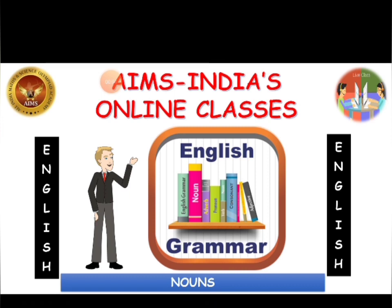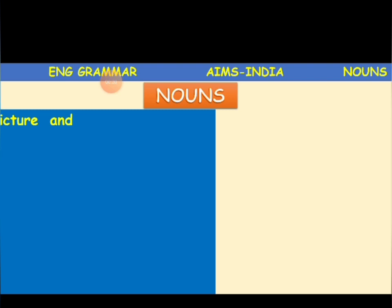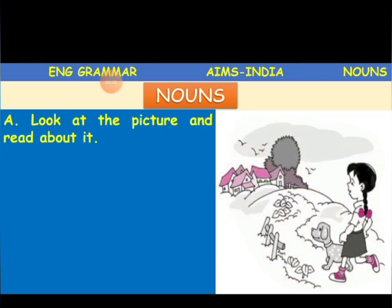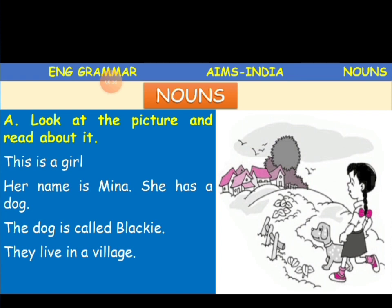Hello children, welcome to AIMS India's online classes. Today we are going to learn about nouns in our English grammar. Here you are having a picture in which you can see a girl along with her dog. This is a girl, her name is Meena. She has a dog, the dog is Blackie. They live in a village, and they call their village Garigao.